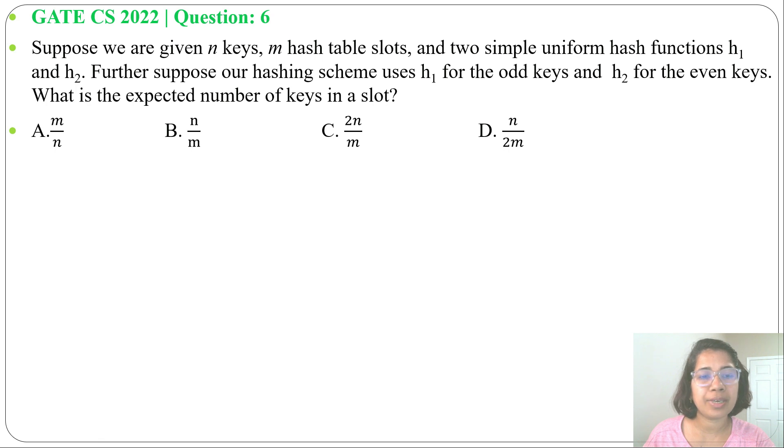and h2 is for even keys. Suppose x is our odd keys and y is our even keys, then x plus y equals n. This means n is the total of all x keys and y keys. h1 is the